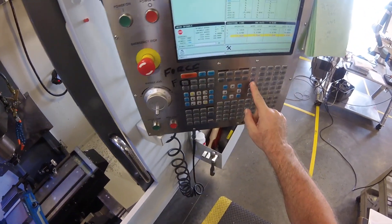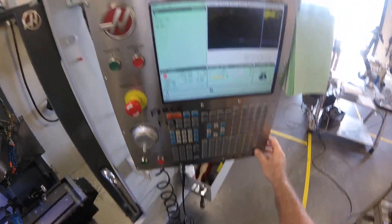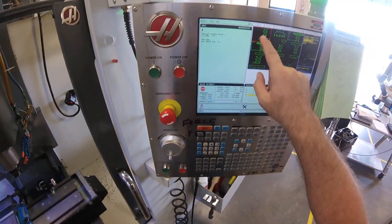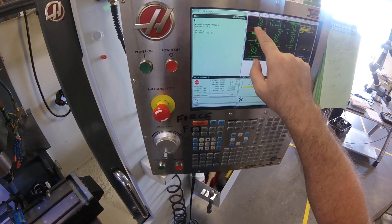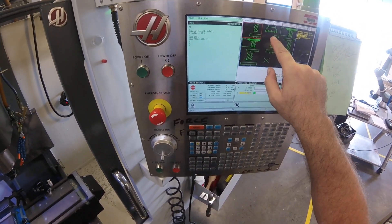Now, if I go to my MDI program screen, tool setting, we've got small tools, half inch or smaller, and big tools.